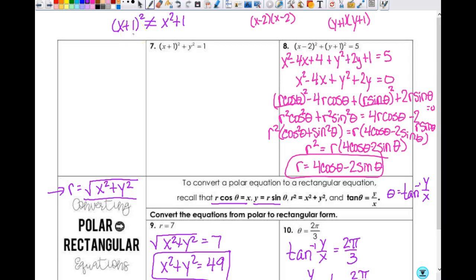Okay, so x plus 1 squared does not equal x squared plus 1. We all understand that, right? So when I actually multiply that out, multiplying x plus 1 times x plus 1, that's going to give me x squared plus 2x plus 1. Then 1 times x is x, so that'd be 2x plus 1 plus y squared equals 1.